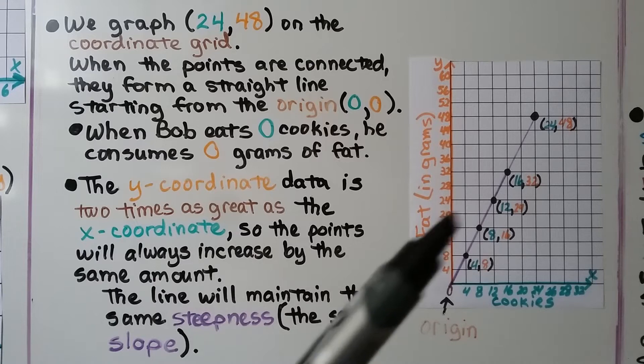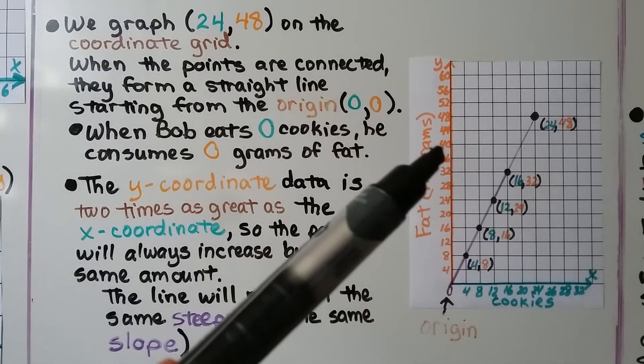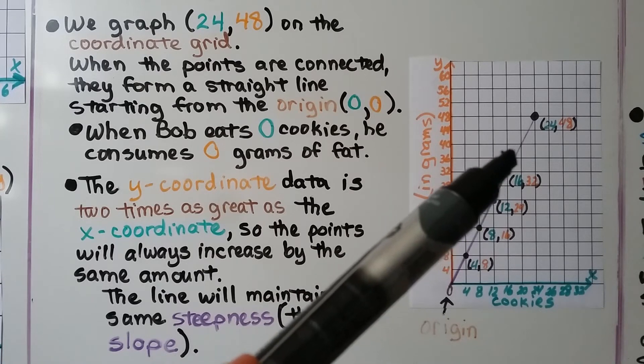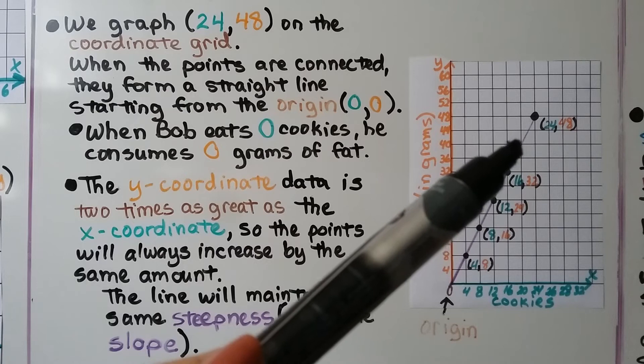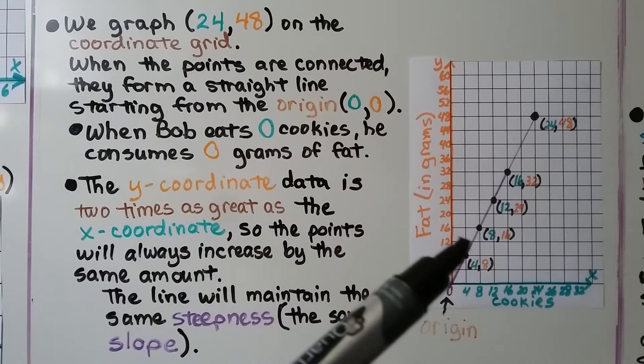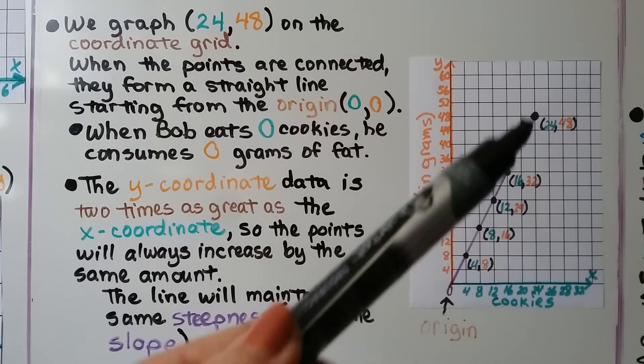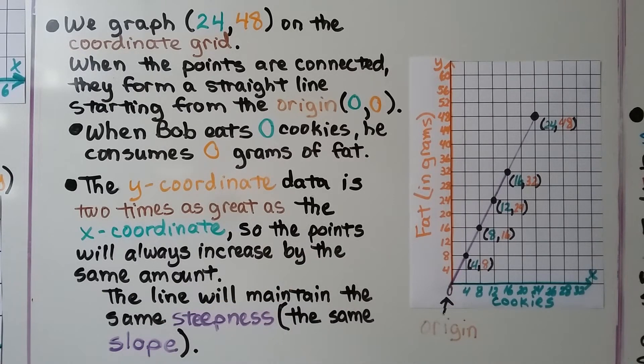If we look at the line, look at where it crosses 20 for x and 40 for y. We can see that that would be another ordered pair. We could take a ruler and make this line continue on straight and we'd be able to find out how many grams of fat he would consume if he ate more cookies.